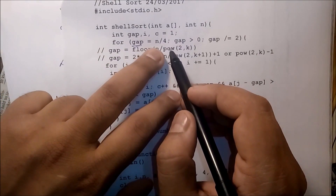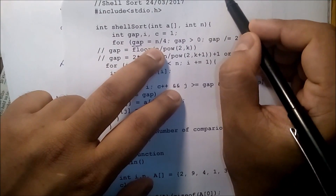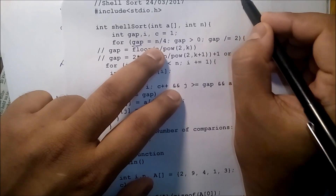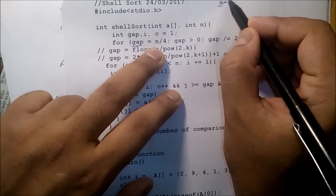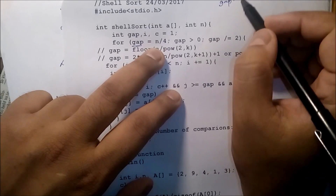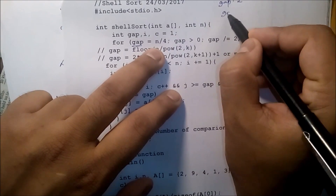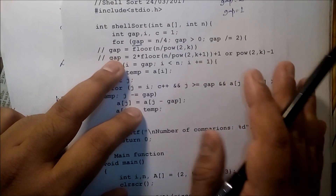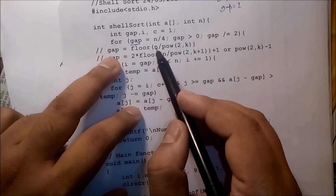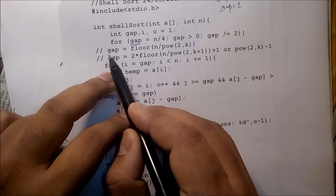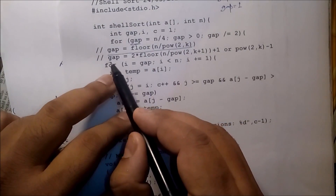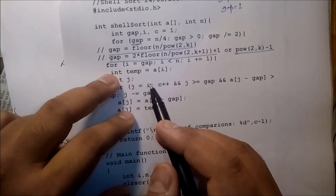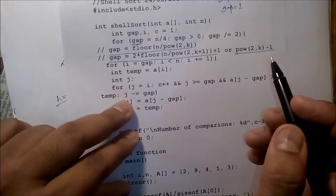To identify the gap, if the initial gap is 16 divided by 4 that is 4, next time gap equals gap divided by 2, giving 4, then 2, then 1. Different techniques exist to determine the gap. We may use various formulas to identify the gap, but our aim is to reduce the number of comparisons.